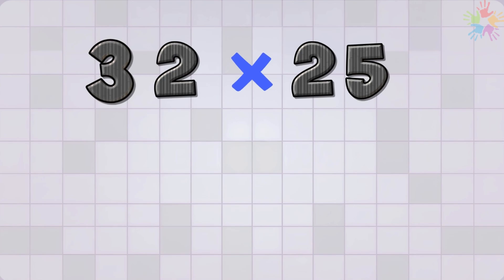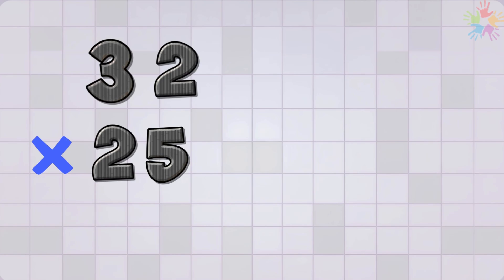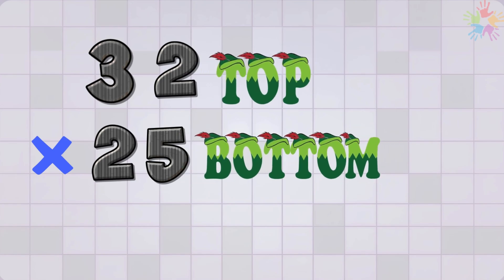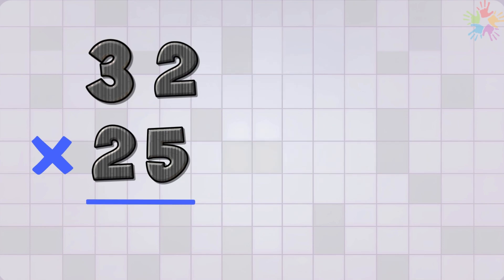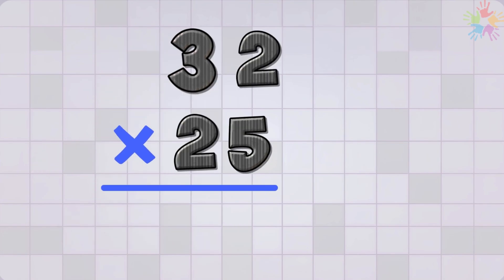Let's try this one. 32 times 25. First, stack the numbers. Put 32 on top and 25 underneath. Then draw a line under them. That's where our final answer will go. Let's begin. Start with the digit in the ones place, which is 5. Now multiply.